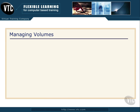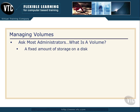Next up on our tour of file system options is volumes. In this video on Managing Volumes, let's talk about the two choices you have. A real succinct definition of a volume is a fixed, measured amount of storage on a disk. There are two types of volumes available in Windows Server 2012: a simple volume or a spanned volume.